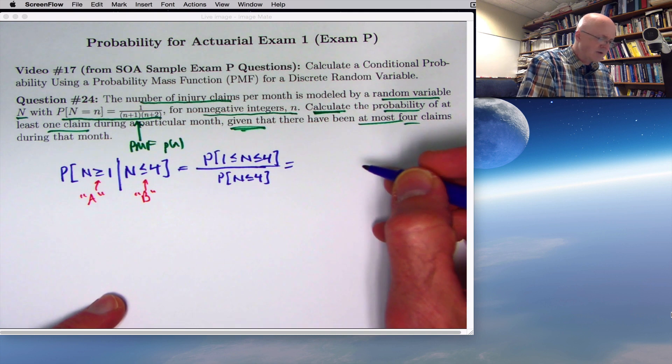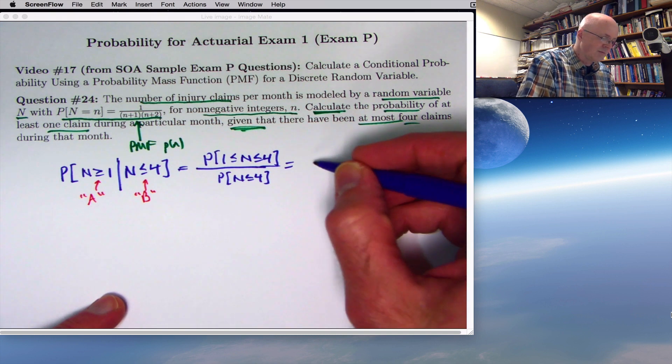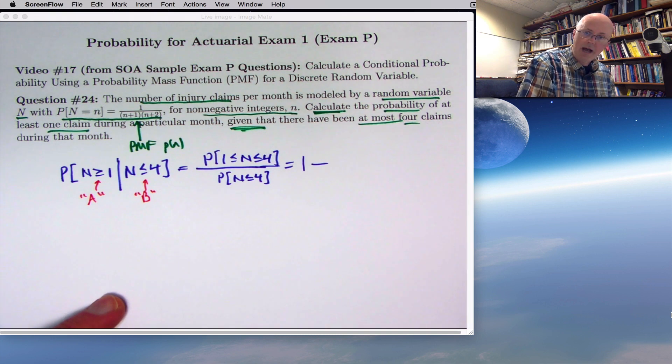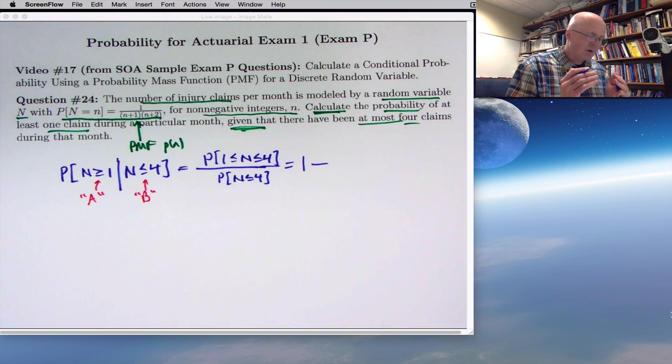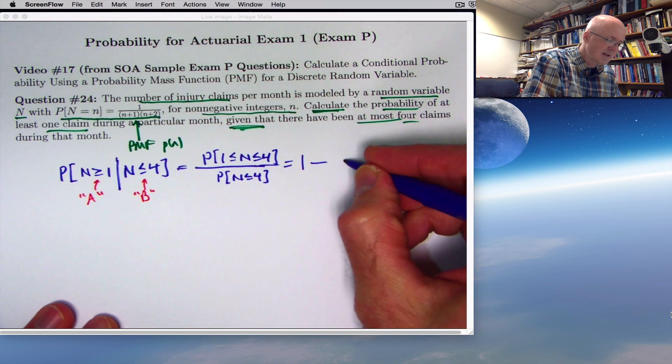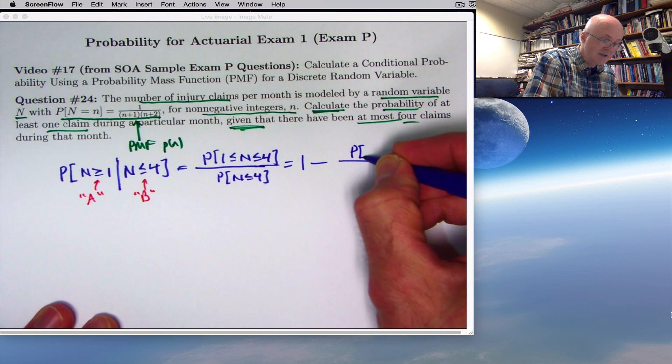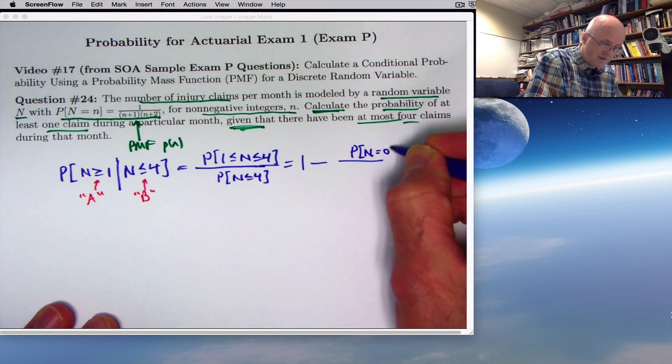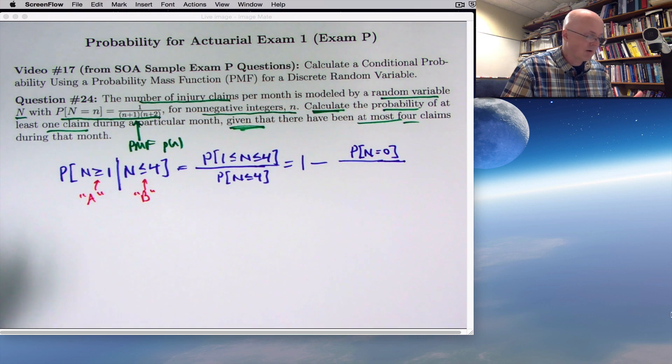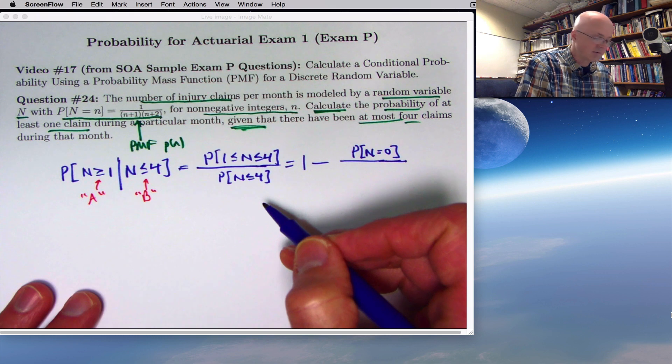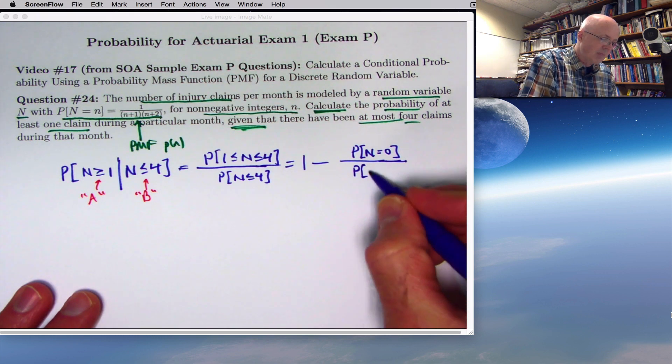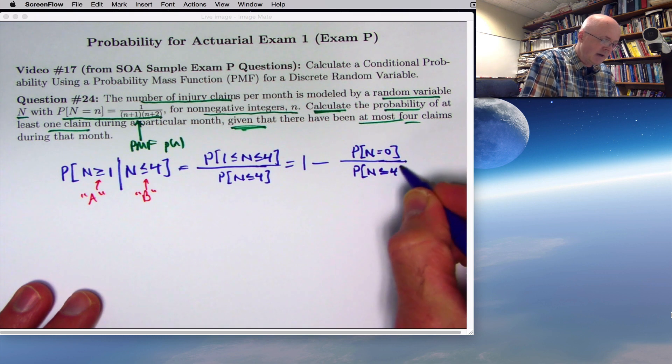All right. It's going to be quicker to think of this in terms of the complement rule, as 1 minus the probability of the opposite event. But we're doing a conditional probability, so effectively we've shrunk the sample space. The opposite event of N being between 1 and 4 is that N is actually 0. In this case, because N can't be bigger than 4, because we're assuming it's less than or equal to 4. So this is the thing we need to calculate.